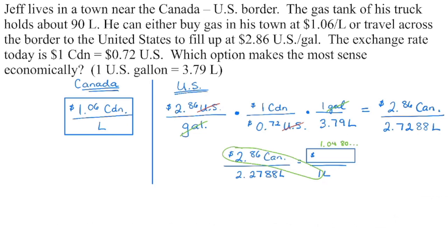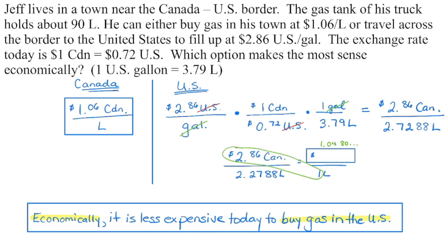And then if I'm looking to figure out the cost per one liter, again, we can set up a proportion, but knowing this is a unit rate, I would just probably divide those. And in the United States, it's going to cost us about $1.04 or $0.05 Canadian per liter. So if we compare $1.06 to $1.04 and a little bit cents, it's going to be cheaper on this particular day to buy gas in the United States.